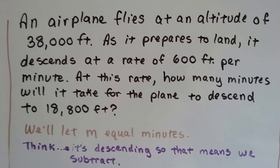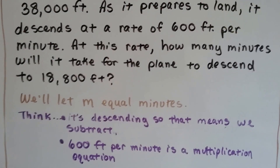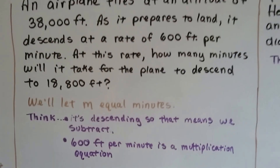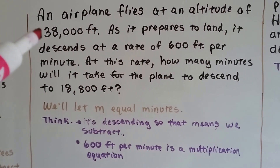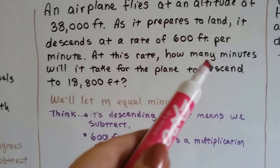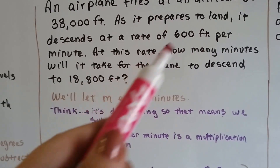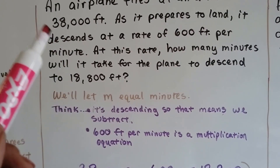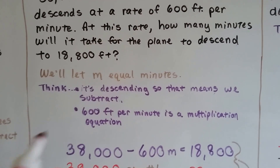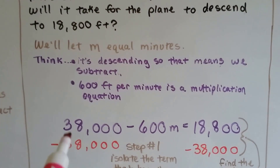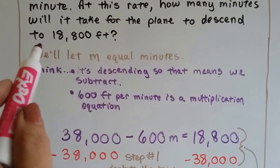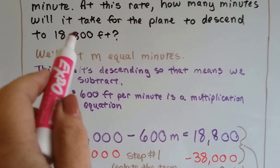An airplane flies at an altitude of 38,000 feet. As it prepares to land, it descends at a rate of 600 feet per minute. At this rate, how many minutes will it take for the plane to descend to 18,800 feet? Its altitude is 38,000 feet, and it's descending at 600 feet per minute. We don't know how many minutes, so we let m equal the minutes. Since it's descending, that means subtract, and 600 feet per minute is multiplication. So our equation is 38,000 minus 600m equals 18,800, because that's where we're landing.